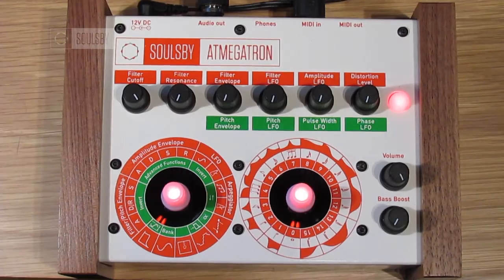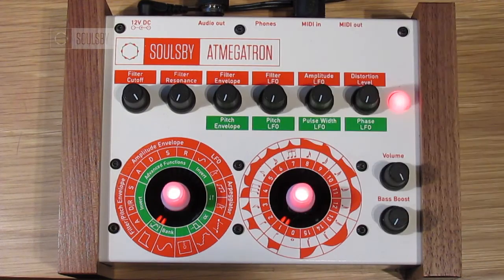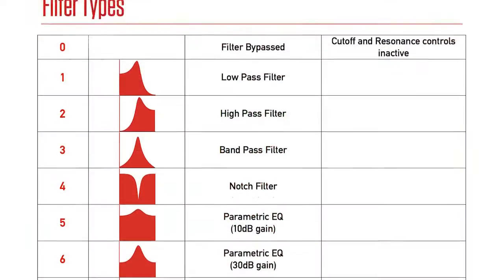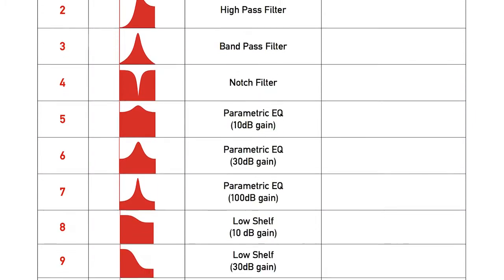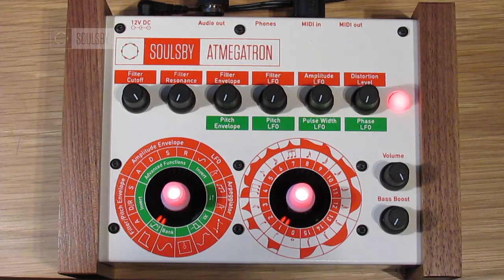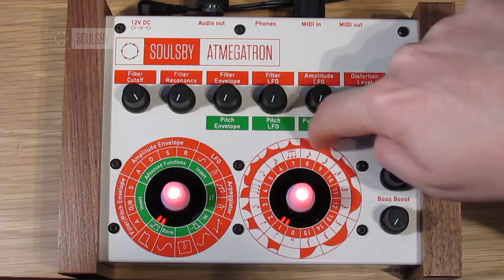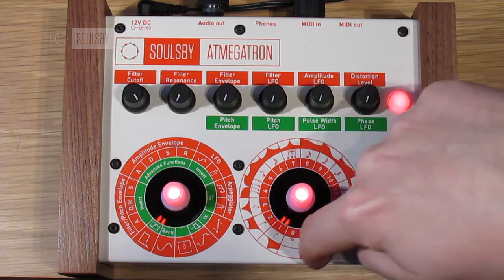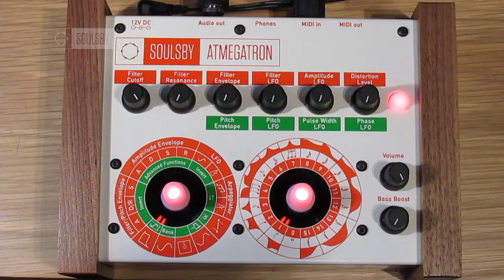Setting the value dial between 1 and 15 turns the filter on and selects a filter type. The list of filters can be found in the manual. On the outside of the value dial are symbols which represent the frequency response of the filter — they're just a quick way of remembering which filter is which without looking in the manual every time.